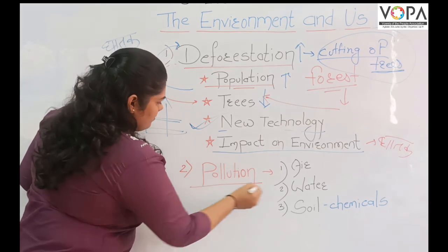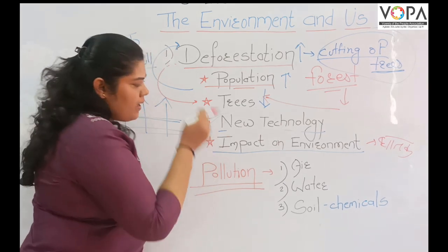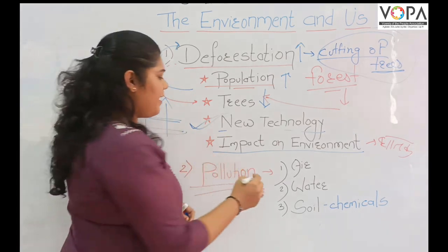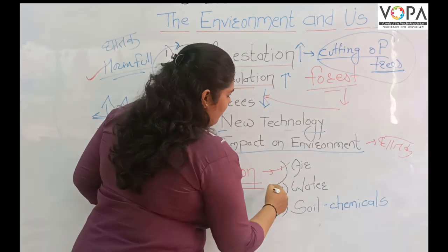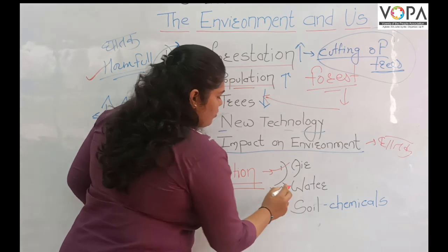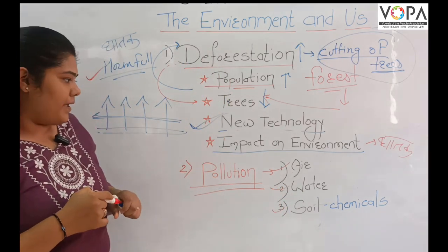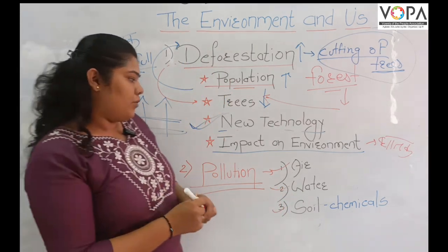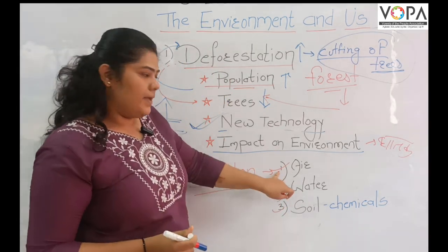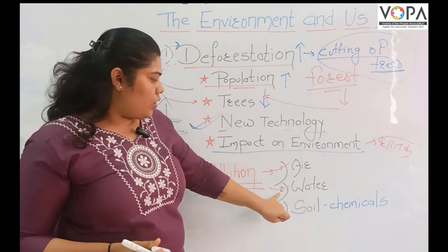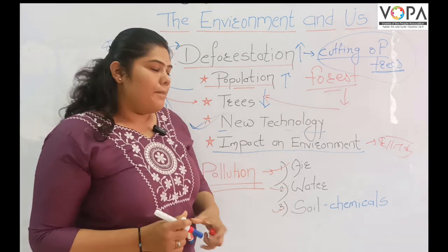Pollution is a major issue. There are different types of pollution in our area: air pollution, water pollution, and soil pollution. These are the main types of pollution that affect the environment around us.